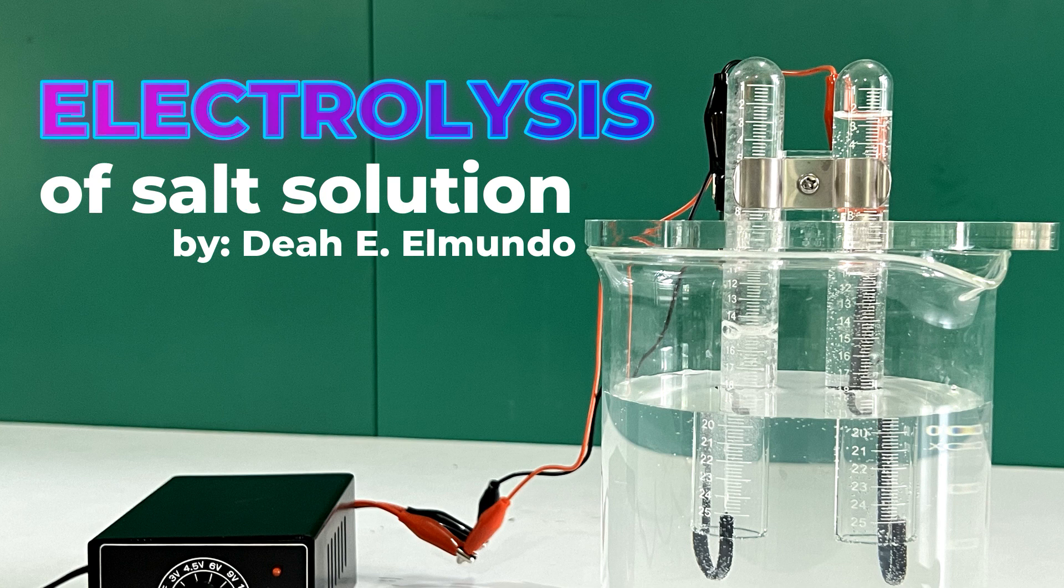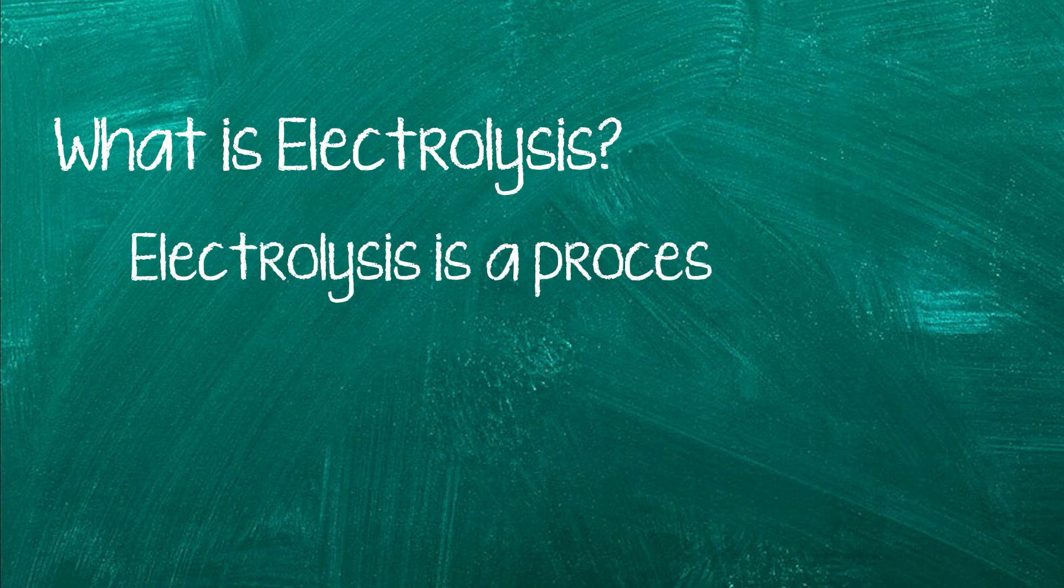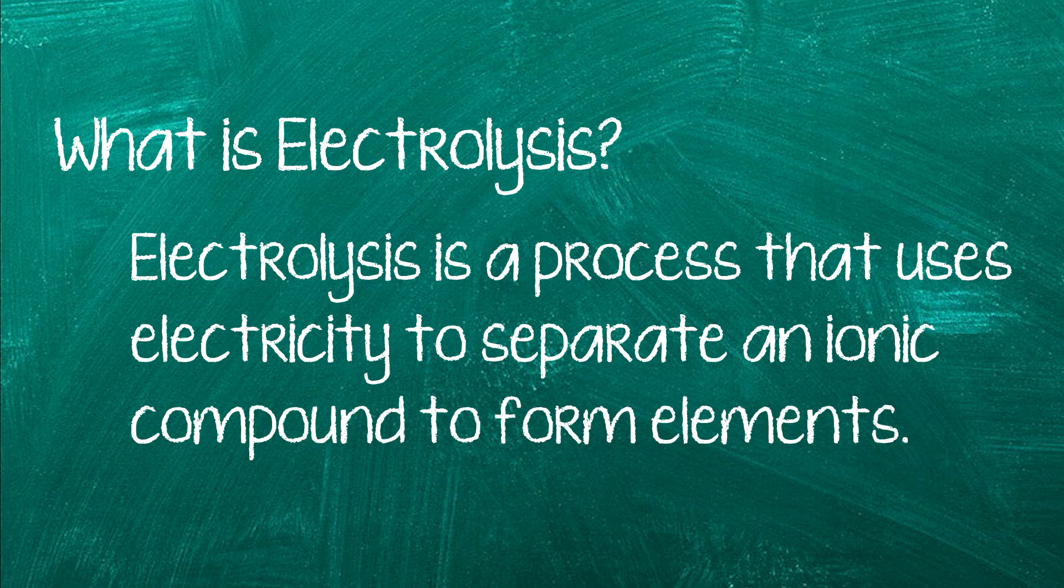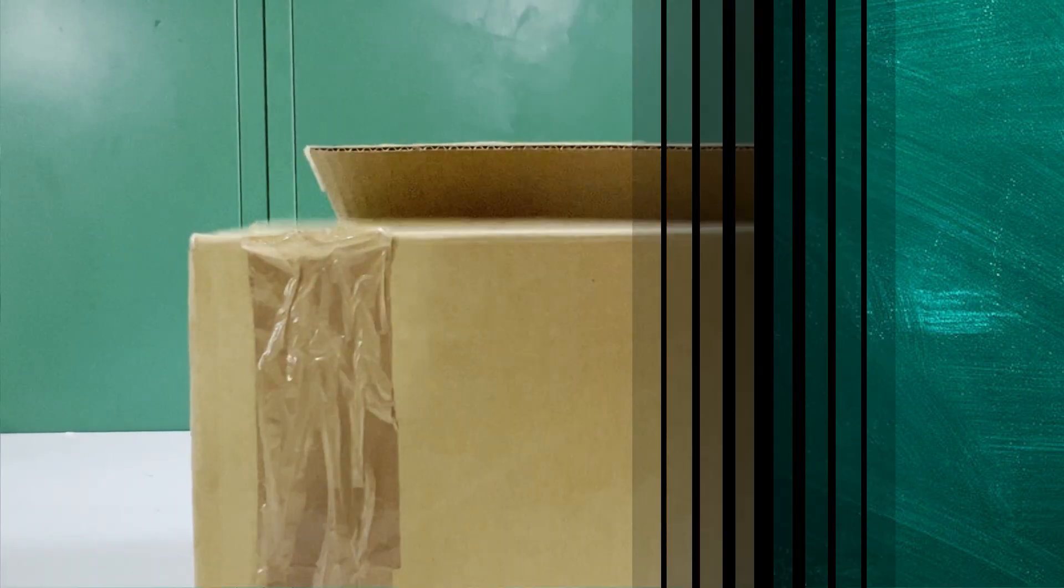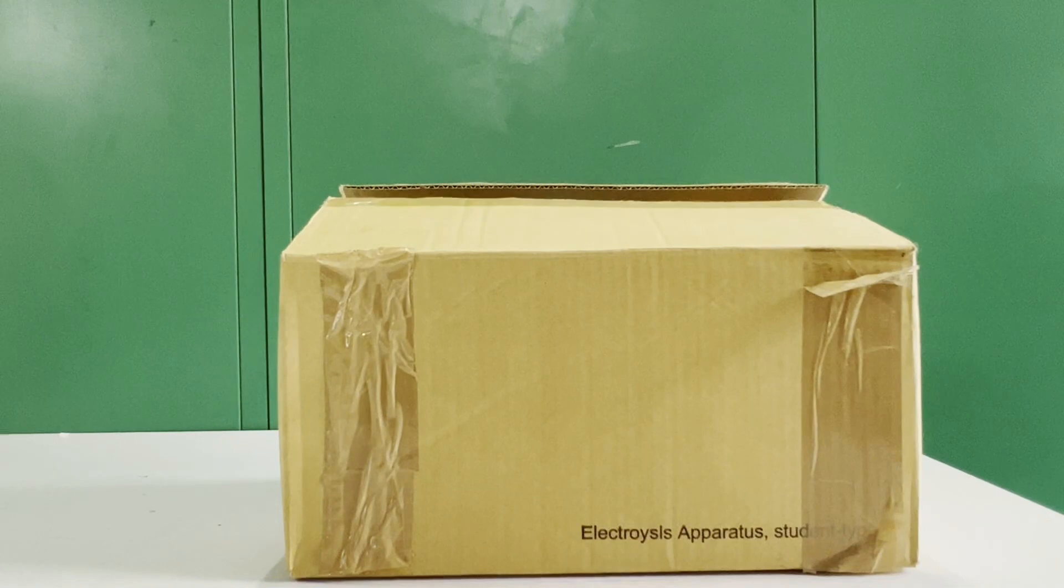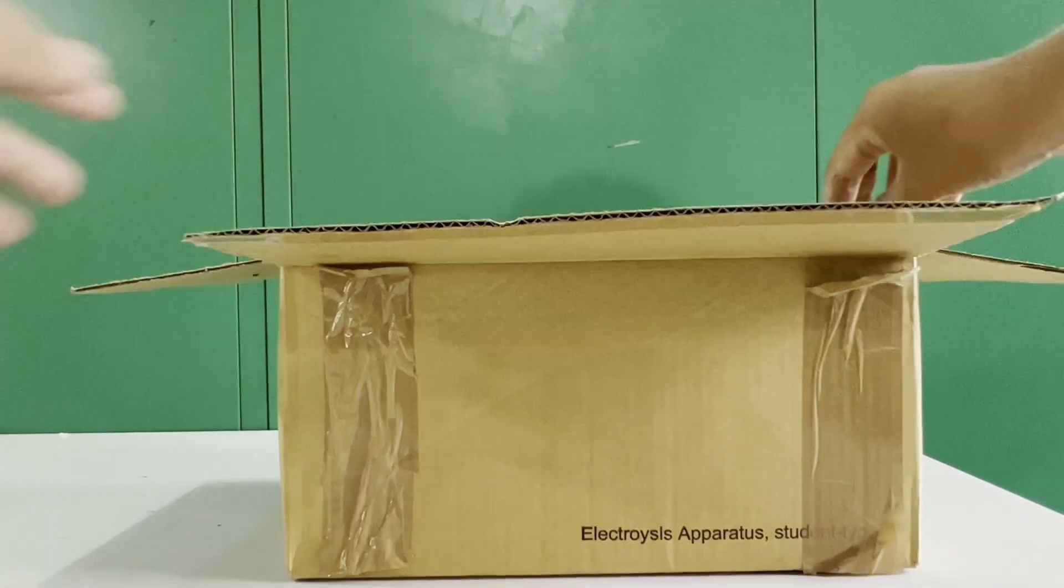But first, what is electrolysis? Electrolysis is a process that uses electricity to separate an ionic compound to form elements. Electrolysis separates the hydrogen and oxygen in water, but water alone is a poor conductor of electricity. So, we need to add salt to convert it into an electrolyte solution and thus, able to conduct electricity.